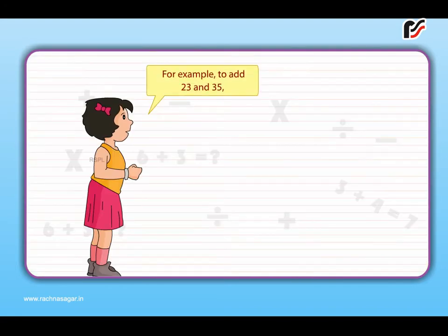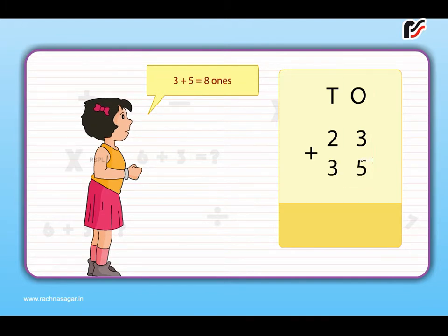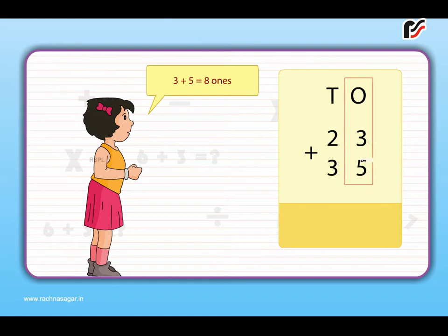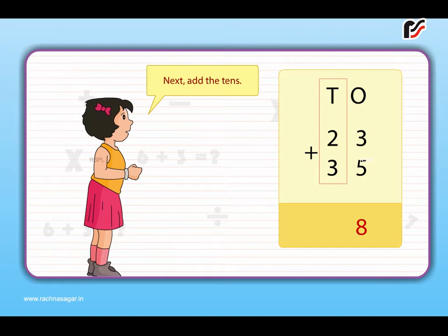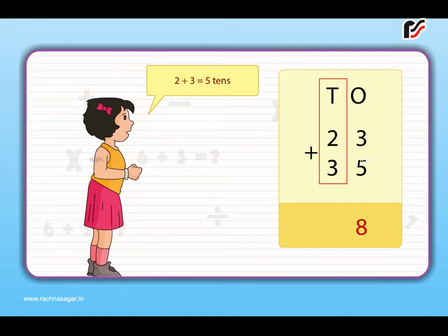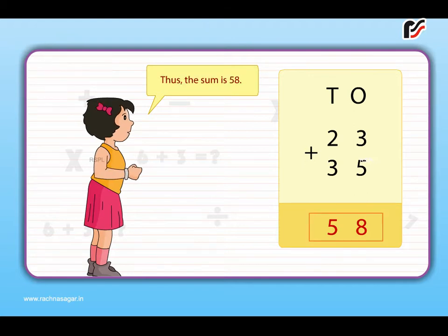For example, to add 23 and 35, first add the ones. 3 plus 5 is equal to 8 ones. Write 8 under the ones column. Next add the tens. 2 plus 3 is equal to 5 tens. Write 5 under the tens column. Thus, the sum is 58.